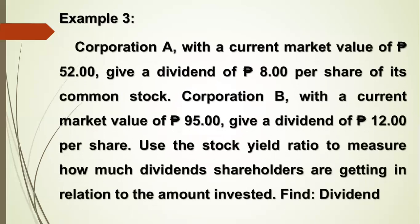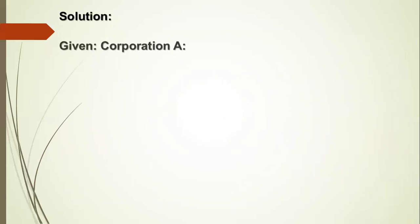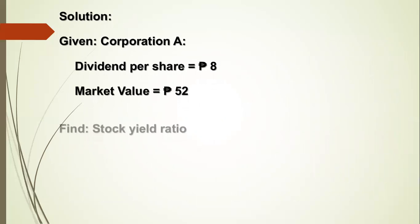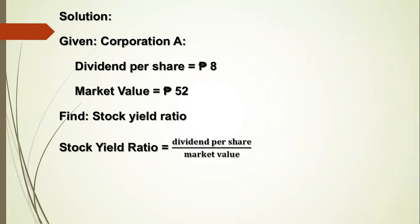Example 3. Corporation A, with a current market value of 52 pesos, gives a dividend of 8 pesos per share of its common stock. Corporation B, with a current market value of 95 pesos, gives a dividend of 12 pesos per share. Use the stock yield ratio to measure how much dividends shareholders are getting in relation to the amount invested. For Corporation A: dividend per share is 8 pesos, market value is 52 pesos. Stock yield ratio equals dividend per share divided by market value, which is 8 divided by 52, equals 0.1538 or 15.38%.